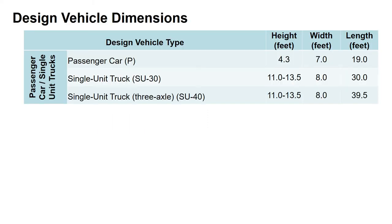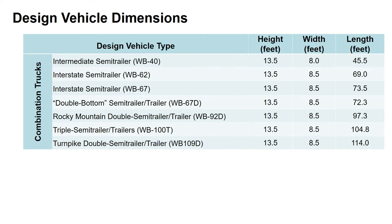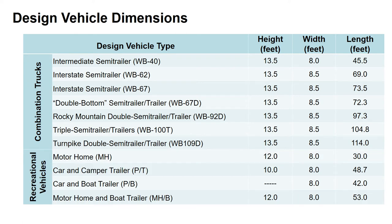We'll start with looking at some of the design vehicle dimensions, and these are broken up by design vehicle type, ranging from passenger and single unit trucks — SU stands for single unit — and we have both the height, width, and length of these vehicles. We also have buses and their associated dimensions, combination trucks — WB stands for wheel base, that's the distance of the wheel base — and then recreational vehicles, or RVs, and their associated dimensions.